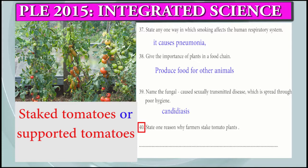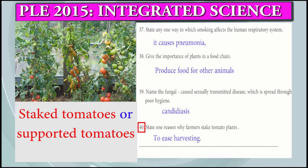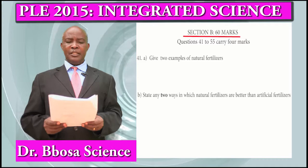Question 40: State one reason why farmers stake tomato plants. To prevent tomato fruits from rotting. To ease weeding. To ease pruning. To ease spraying. To ease harvesting.